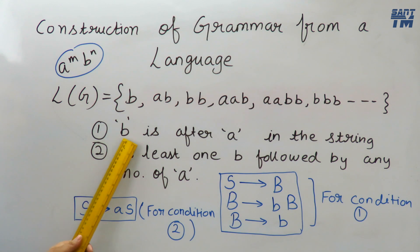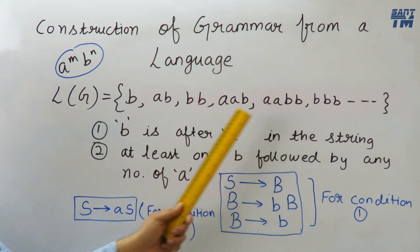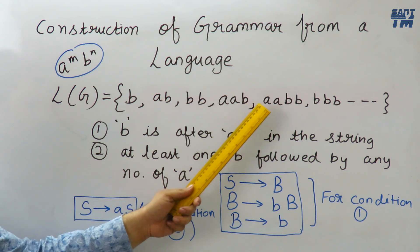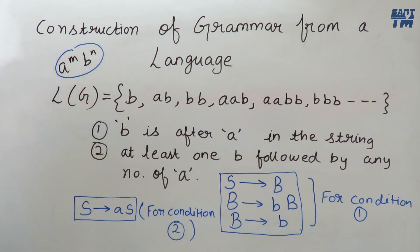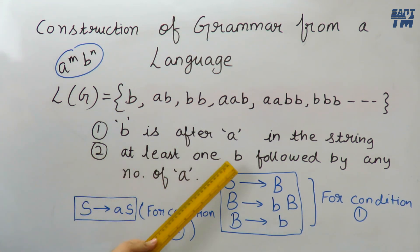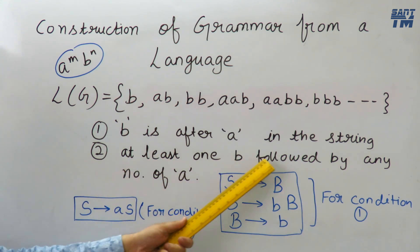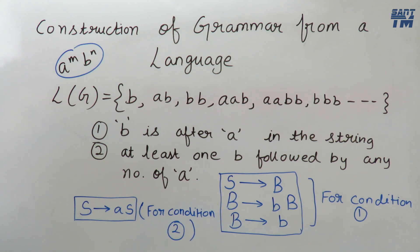The conditions are: first, b is after a in the string — if a is present then b follows it. If a is not present then this condition does not hold. Second condition: at least one b, followed by any number of b's — since n is greater than 0, at least one b will always be present. To fulfill these two conditions, we derive a production rule purely by hit and trial method.